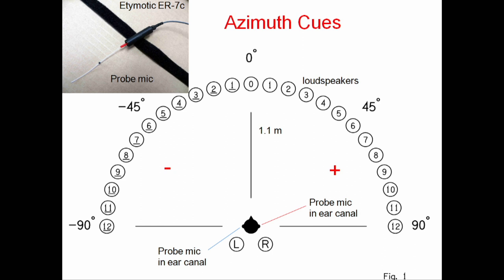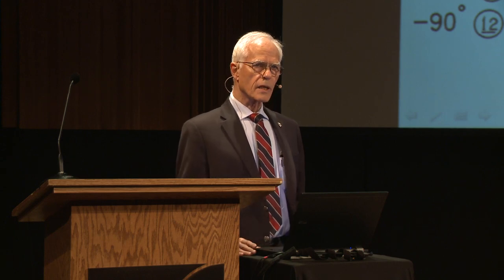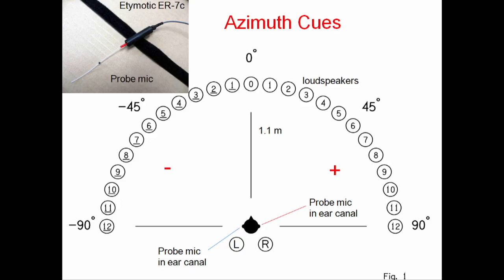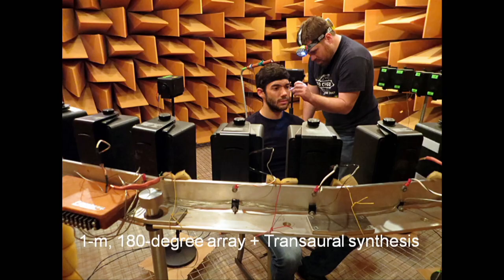We can start out by measuring these cues with a system consisting of 25 loudspeakers around the listener, and we put probe microphones in the listener's ear canals. Here's a Velcro band that goes around the head, and a capsule that attaches to the Velcro band. This probe is light and flexible, goes in the ear canal and helps us measure. Also here behind the listener are a couple of synthesis loudspeakers. Here's what it looks like — the loudspeaker array in front of the listener, the experimenter putting probe microphones in the listener's ear canals. Synthesis loudspeakers are there behind the listener.